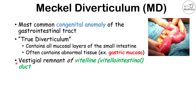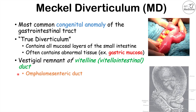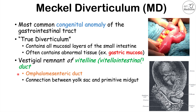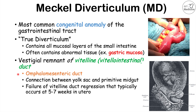Meckel's diverticulum is considered a vestigial remnant of the vitelline, or omphalomesenteric, duct. This duct is present during embryonic development but is supposed to regress — it's supposed to go away. It was a connection between the yolk sac and the primitive gut. It should regress around five to seven weeks in utero, but in Meckel's diverticulum there is a failure of regression of this duct.